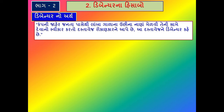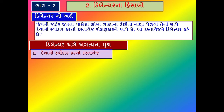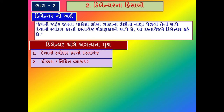ડિબેન્ચર વિશે - કંપની જાહેર જનતા માટે આ ડિબેન્ચર બહાર પાડે છે. જે વ્યક્તિ આ ડિબેન્ચર ખરીદે છે, તેને ડિબેન્ચર સર્ટિફિકેટ નામનો દસ્તાવેજ આપવામાં આવે છે. ત્યારબાદ, ચોક્કસ અને નિશ્ચિત વ્યાજ દર હોય છે.